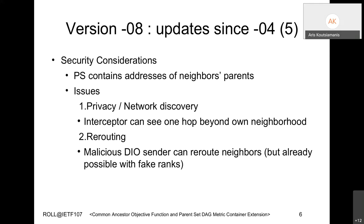Aris: Security considerations have been added. The main addition is that the DIO carries the addresses of a node's neighbors, so a node could potentially expose information one hop beyond its immediate neighborhood—a small privacy and network discovery issue. A malicious node could see one hop further. Additionally, a malicious DIO sender can modify what the parent set reports, tricking other nodes into routing through itself. However, this is already possible by reporting a fake rank, so this is no worse than what is already possible.